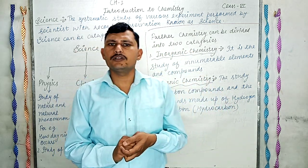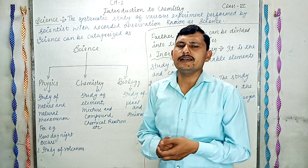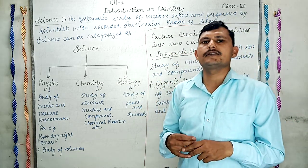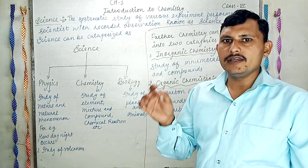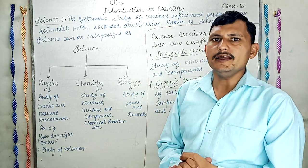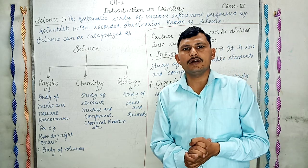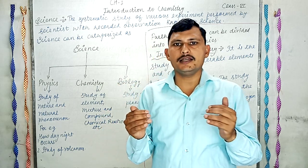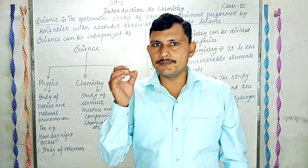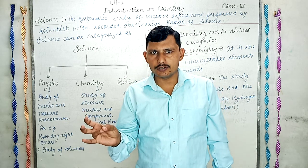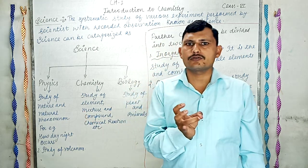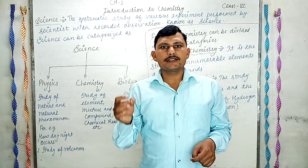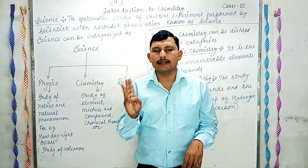let me give you a quick review of science. In the previous class, you learned what science is. Science is basically the systematic study of various experiments performed by scientists, with recorded observations. Science basically ek systematic study hoti hai jiske basis par hum observation record karte hai aur particular process ko, phenomena ko observe karte hai.